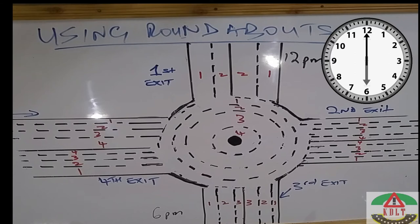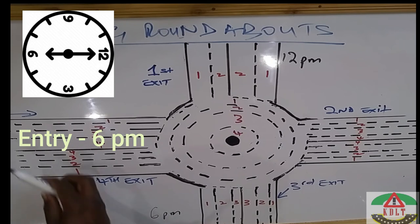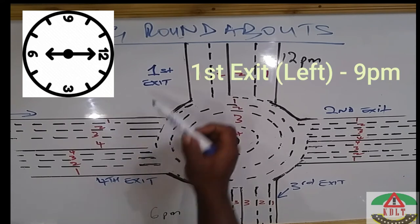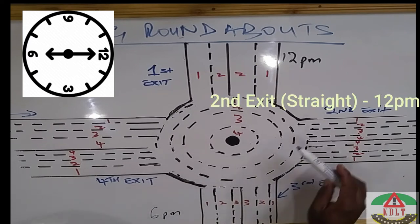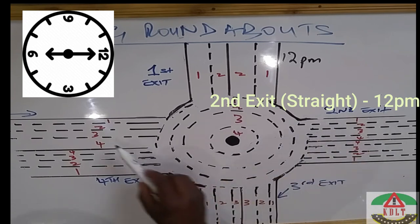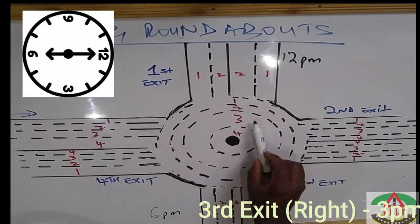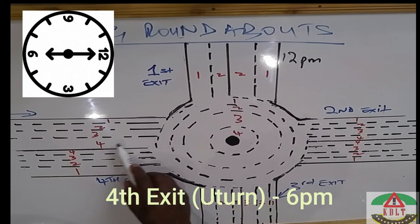A roundabout has four exits. Assuming you are entering from one position, your first exit is your first left. Your second exit is straight on — always remember straight on is your second exit. Your third exit is one right turn and one left turn. Finally, your fourth exit is a U-turn.